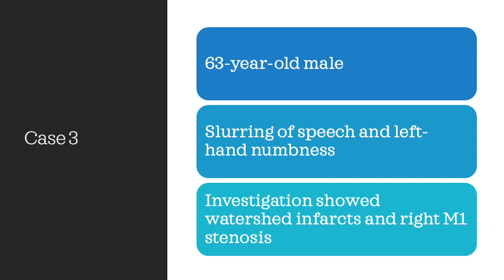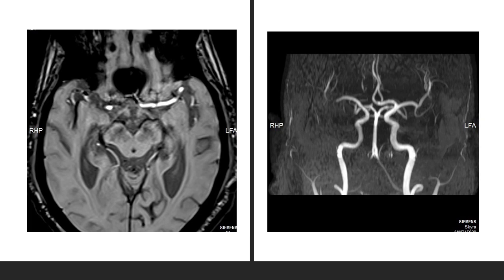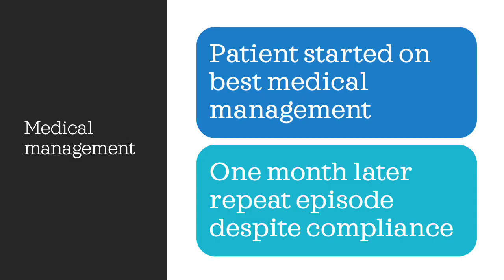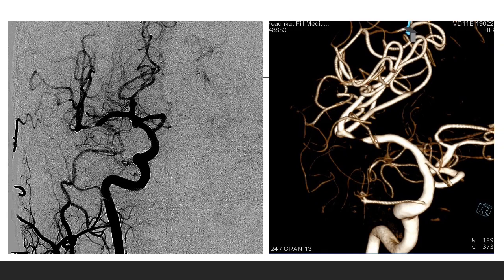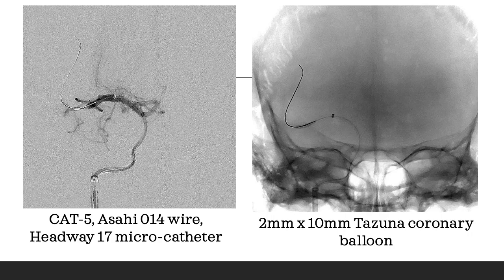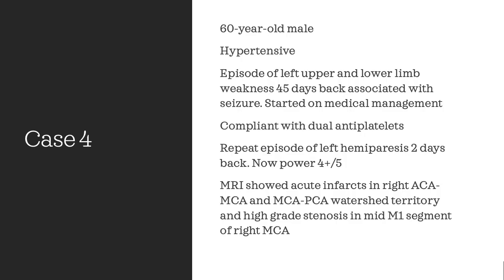Case 3: 63-year-old male with slurring of speech and left-hand numbness. Imaging showed ischemic changes in the parieto-occipital region. Angio showed distal MCA stenosis. Patient started on best medical management, but one month later had a repeat episode with a larger and fresh infarct. Angio showed very critical stenosis of the distal MCA. We performed sub-optimal balloon dilatation and placed a Credo 3 mm stent matching the M1 segment diameter, with good result.